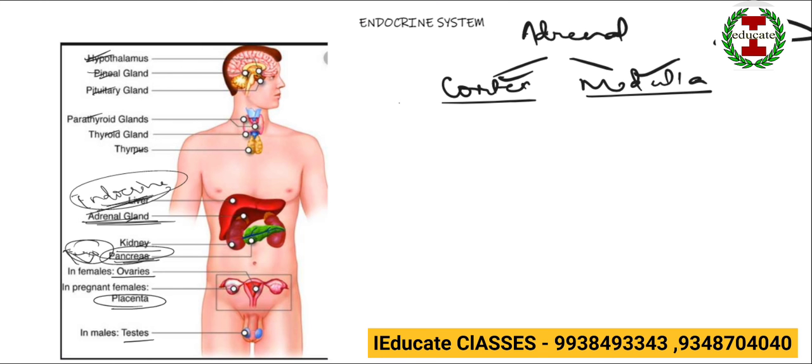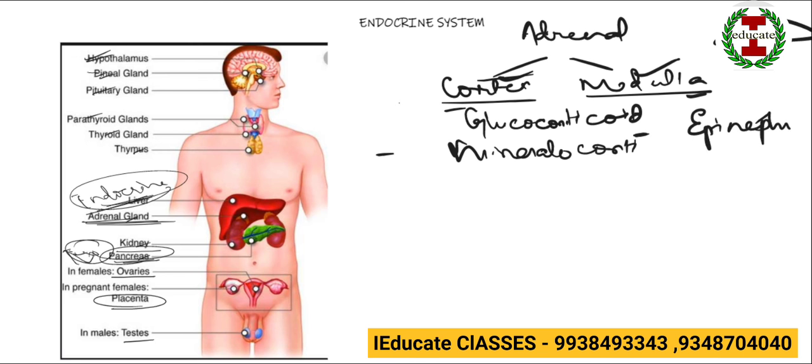So from the adrenal cortex, hormones like glucocorticoid and mineralocorticoid are secreted. So the major function of this adrenal gland is fight or flight.